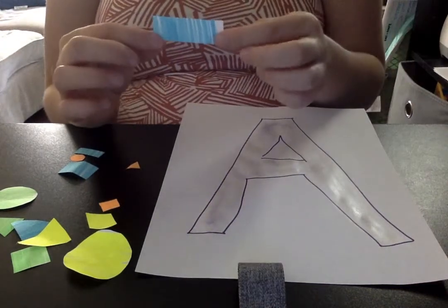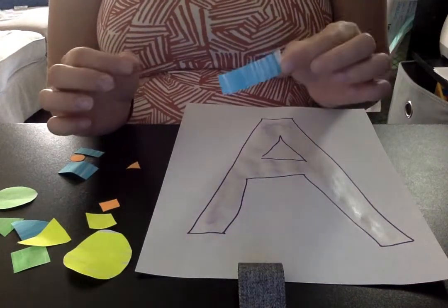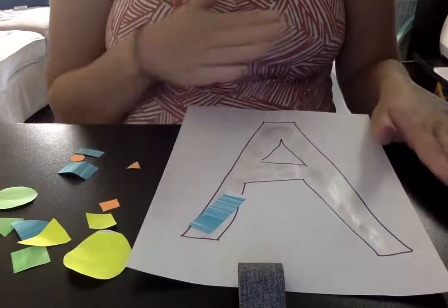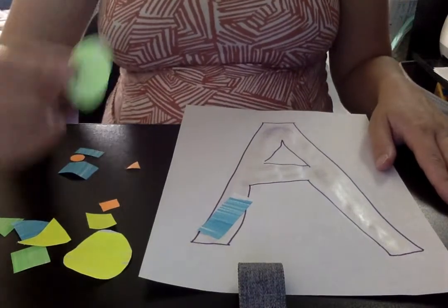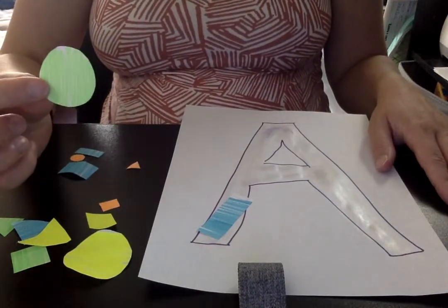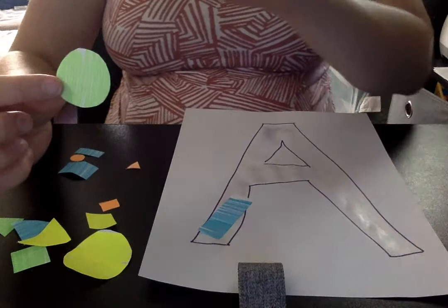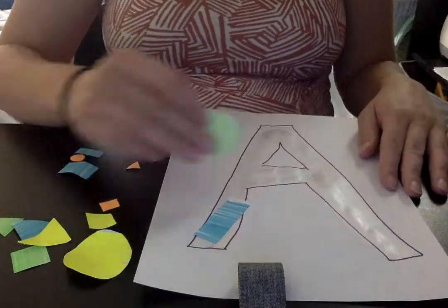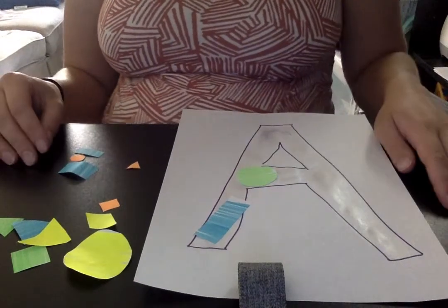You can ask them also, oh what shape is this? It's a rectangle. Okay, put the rectangle on the A. Wherever they put it, it does not have to be perfect. Pick it up. What shape is this? A circle. It's round. You can also do what color is this? Green. And they could paste it wherever they want.